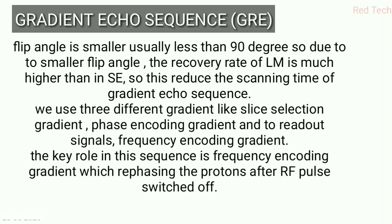In gradient echo sequences, the flip angle is smaller — usually less than 90 degrees, approximately 10 to 80 degrees. The flip angle refers to how much you flip the hydrogen proton from its resting position. Because we use a smaller flip angle, the recovery of longitudinal magnetization is faster than in Spin Echo. When you flip the hydrogen proton at a smaller angle, it can recover its state more easily.